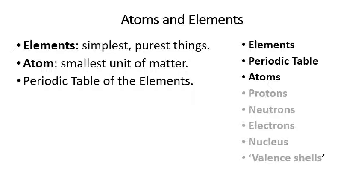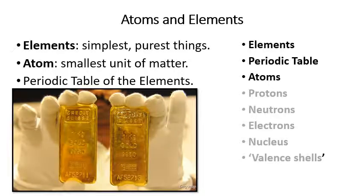An atom is not really the smallest possible thing, because an atom is composed of neutrons, protons, and electrons. Those can be broken down into even smaller things, as physicists know. But in biology, we only need to talk about atoms, which are composed of neutrons, protons, and electrons.